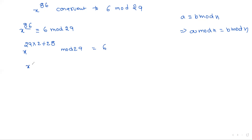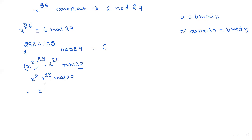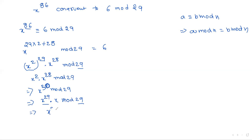So x^86 = (x^2)^29 · x^28 mod 29. Here a = x^2 and p = 29. By Fermat's theorem, a^p mod p = a, so (x^2)^29 mod 29 = x^2. Then x^28 · x^2 = x^30 = x^29 · x mod 29, giving x^2 · x = x^2 mod 29.